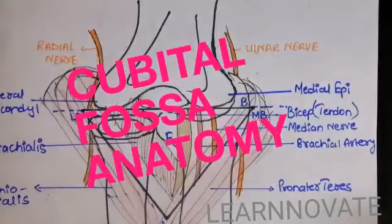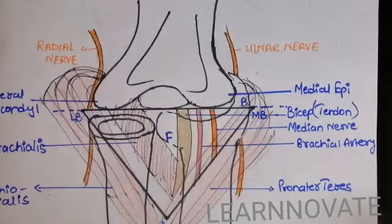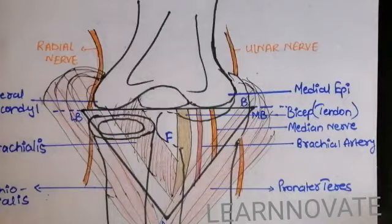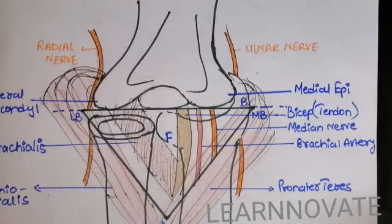Welcome to my channel. Today we are going to discuss about the cubital fossa. The cubital fossa is also called as the anterior triangle of the elbow joint.